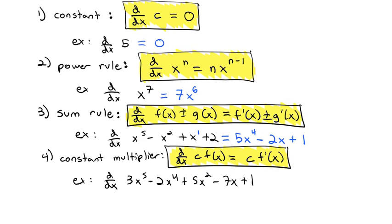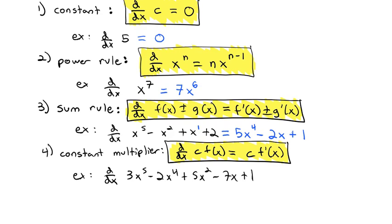The 3 can just be multiplied by whatever the derivative is of x to the fifth — we know we pull that exponent out front, so 3 times 5 is 15, x to the fourth power. Minus: bringing the exponent out front, 2 times 4 is 8, x cubed. Plus 2 times 5 is 10x. Minus: 7 times 1 is 7, the x disappears, and the derivative of the constant is 0. So now we have our new derivative of that polynomial. These four basic rules of differentiation will save us a lot of work and time on that derivative formula.